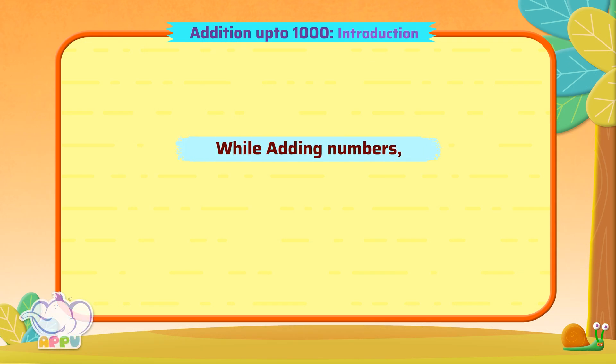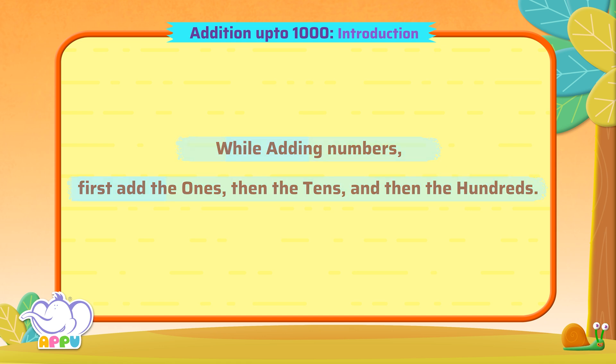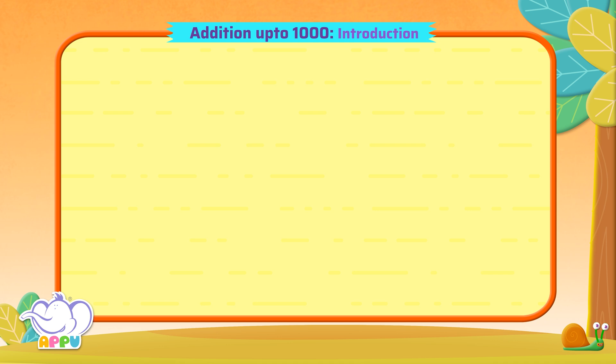While adding numbers, we add the ones first, next the tens, and then the hundreds. Let's look at an example.